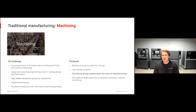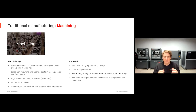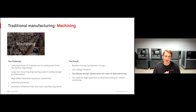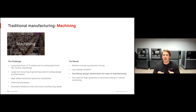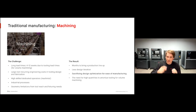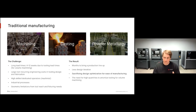The result of these challenges is that you're generally seeing months to bring up a production line, much of that due to tooling needs. There's less design iteration — once you've developed hard tooling and fixturing for volume machining, you're really stuck with that design and don't want to make changes. This creates a need to sacrifice design optimization for ease of manufacturing, where you're more concerned about whether your part can be machined quickly and affordably than whether it's the best design for your application. These challenges are really true for all traditional manufacturing methods, whether casting or powder metallurgy.